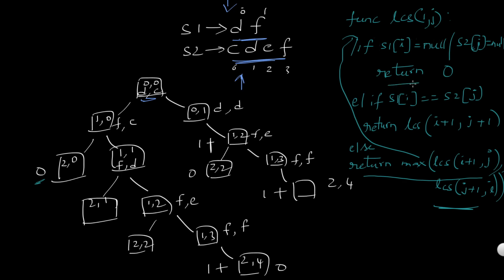Continuing: at i=1,j=1 we have F and D — not equal. We reach 2,1 which returns 0. Then at i=1,j=2 we have F and F — they are equal. So at i=1,j=2 (matching F and F), we call LCS(i+1, j+1) = LCS(2,3), which returns 0 since we're out of bounds. So the function correctly traverses all paths through the recursion tree.